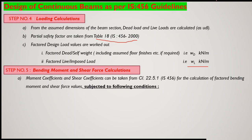The moment coefficients and shear coefficients can be taken from clause 22.5.1 of IS 456 for calculating factored bending moment and shear force values. However, before using these coefficients, we must verify that certain conditions stipulated by the code are fulfilled.